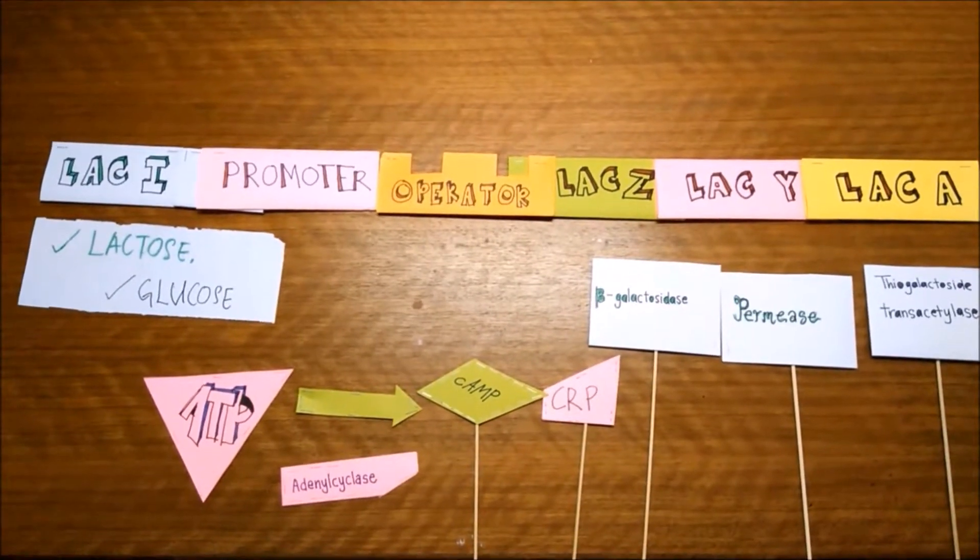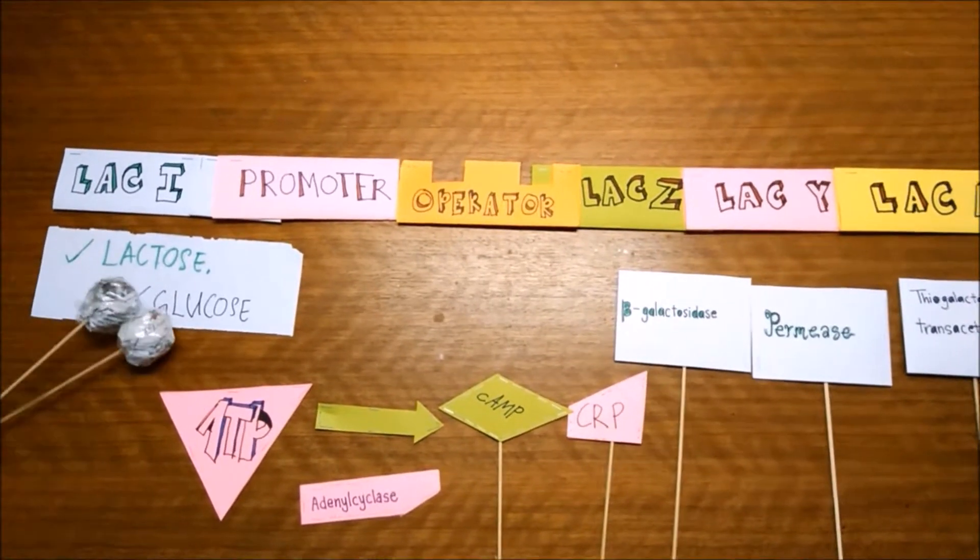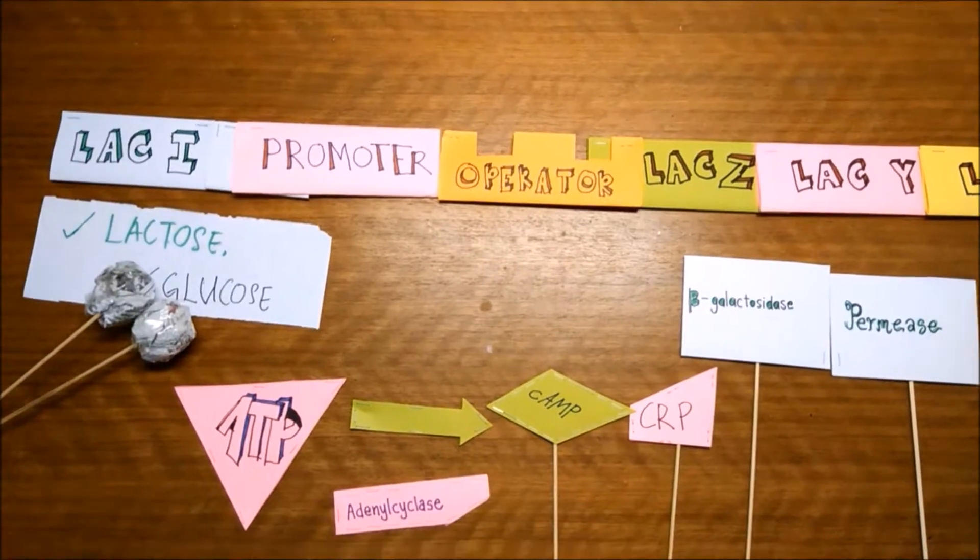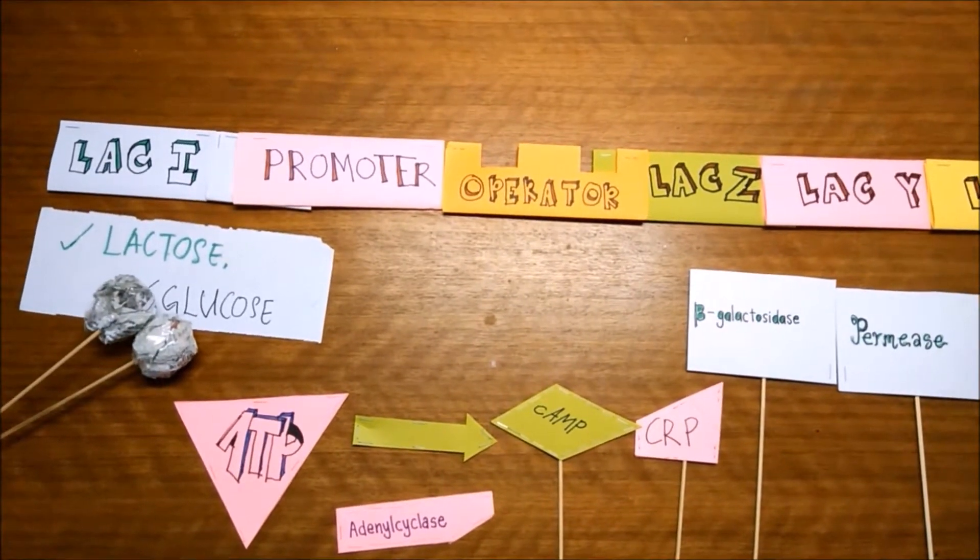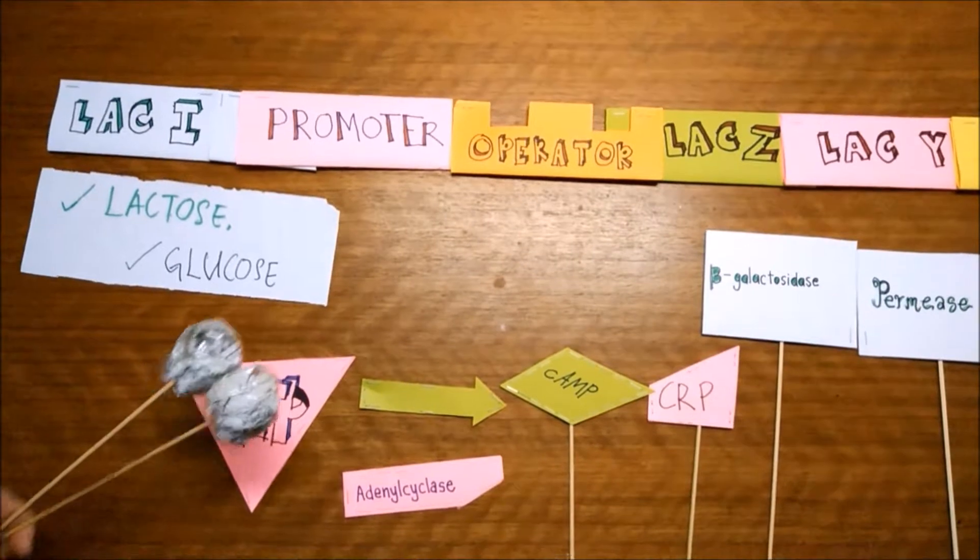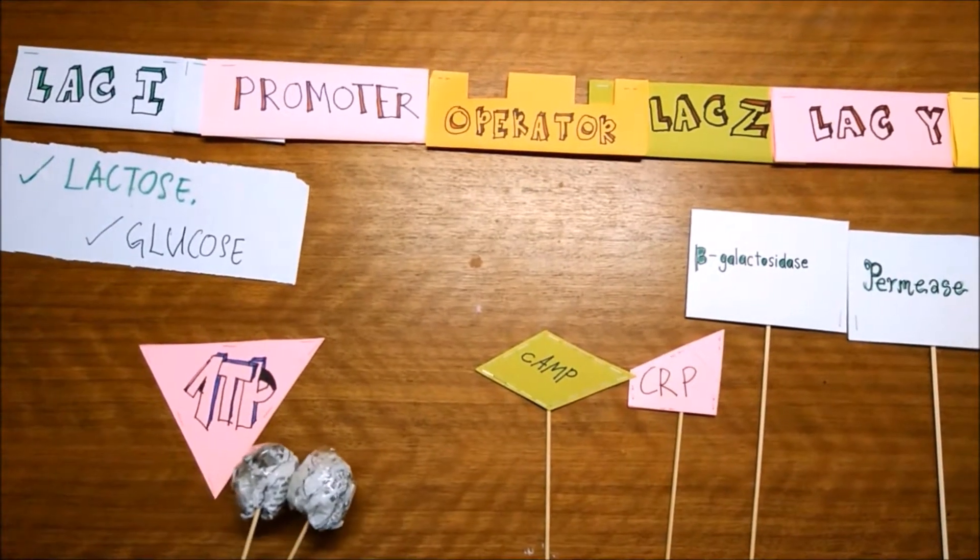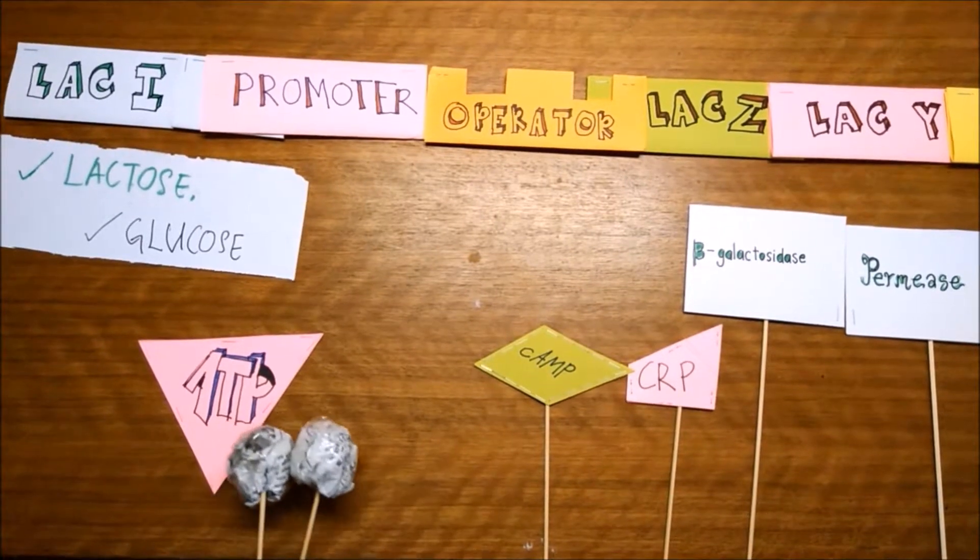But in the presence of glucose, Lac Operon will prefer glucose in order to reduce the energy consumption. How? Glucose will prevent adenyl cyclase from breaking down the ATP to cAMP.